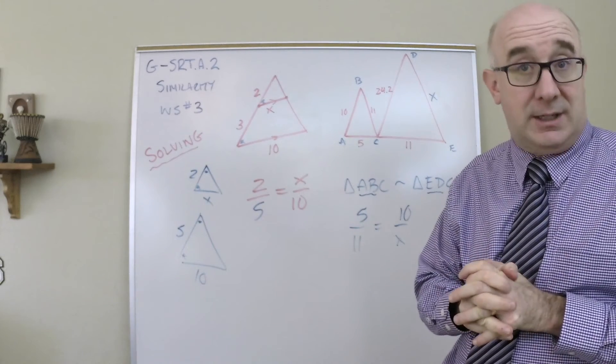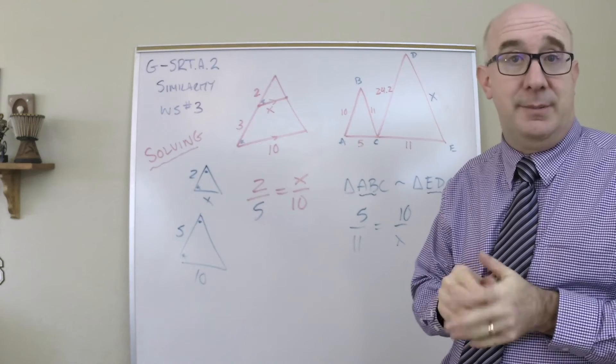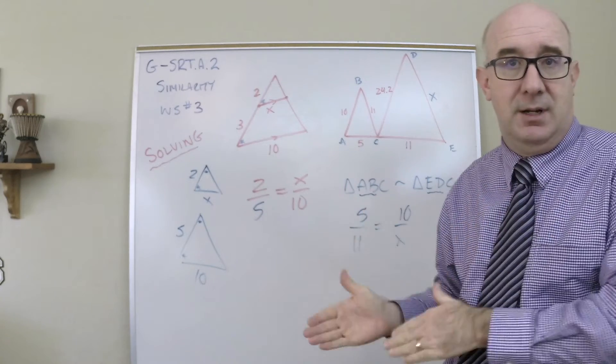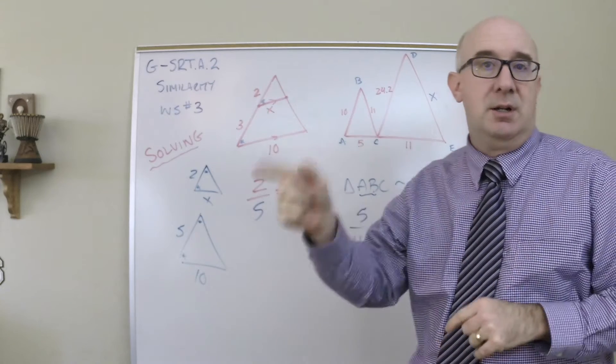Use the fact that if there aren't markings, but they are similar, then it will always be smallest to smallest, middle to middle, large to large. Let's go look at some.